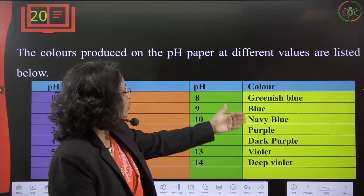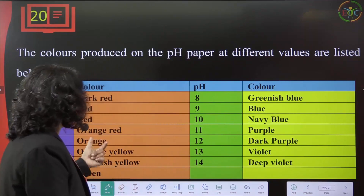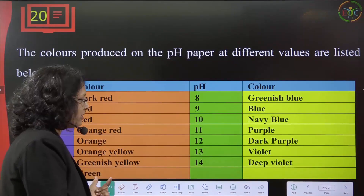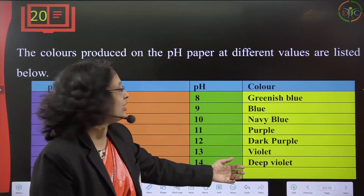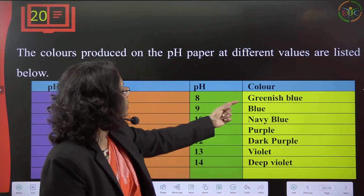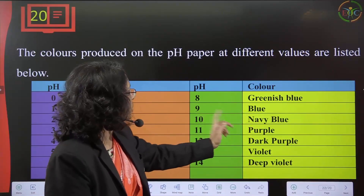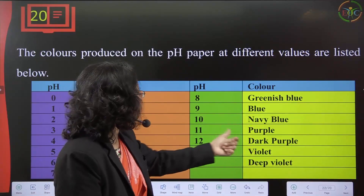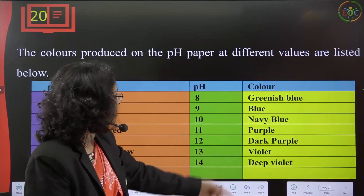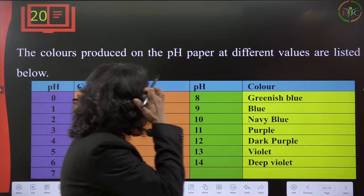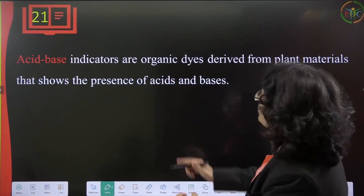pH 8 is greenish blue, pH 9 is blue, pH 10 is navy blue, pH 11 is purple, pH 12 is dark purple, pH 13 is violet, and pH 14 is deep violet.